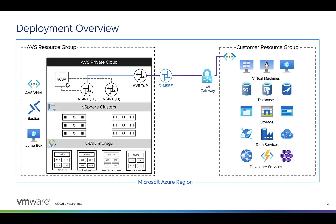Azure VMware Solution delivers VMware-based private clouds in Azure. The private cloud hardware and software deployments are fully integrated and automated in Azure. You deploy and manage the private cloud through the Azure portal, Azure CLI, or PowerShell. This diagram shows the private cloud within its own Azure resource group and adjacent connectivity to another VNet with native Azure services running within it in the same region.